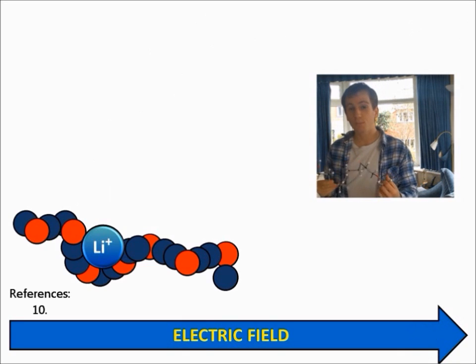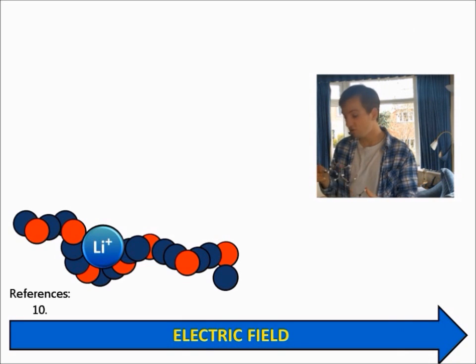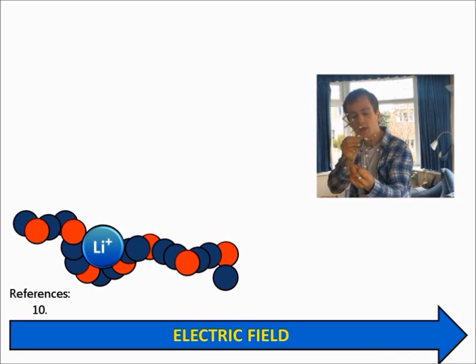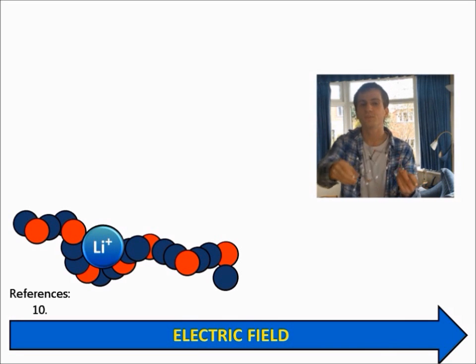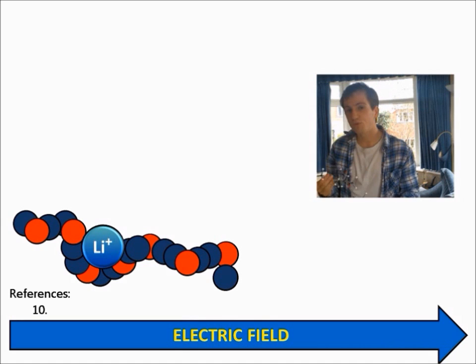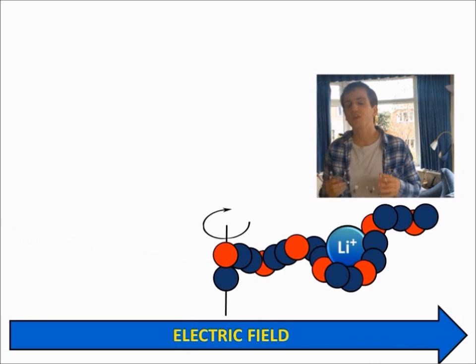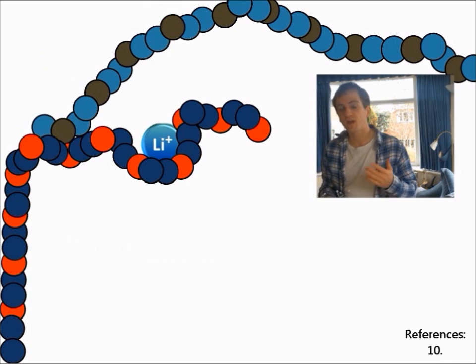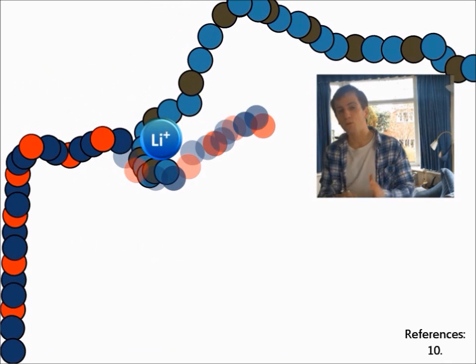We have intra-polymer transportation, where rotation around a bond has a swinging motion, moving the lithium ion forwards, and we have inter-polymer transportation, where lithium ion is passed between two polymer chains. Coupled together, these two transport mechanisms allow the lithium ion to move through the polymer.